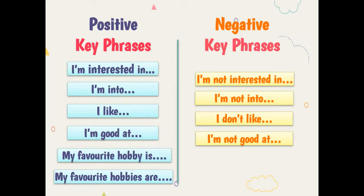You can also say 'my favorite hobbies are' if you want to talk about more than one hobby. Do you understand? However, if you want to talk about hobbies and interests that you don't like, you can use the negative key phrases. These are the key phrases: I'm not interested in, I'm not into, I don't like, and I'm not good at.